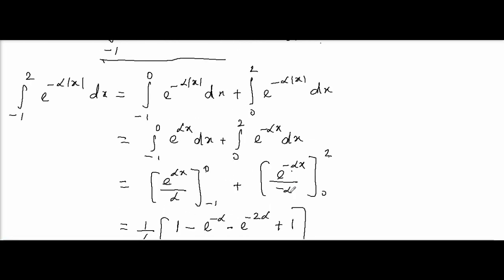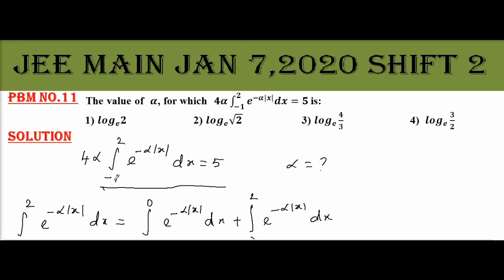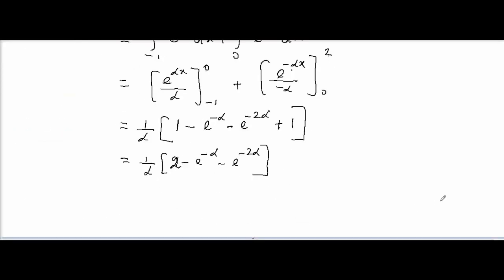Now, we will go for the given equation. Given equation is 4α times integral value equals 5. Therefore, I get 4α times this integral value: 1/α into (2 - e^(-α) - e^(-2α)) equals 5.